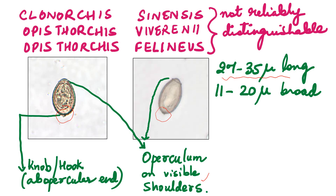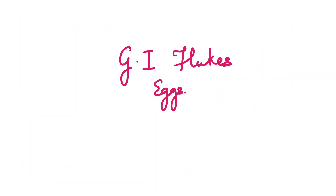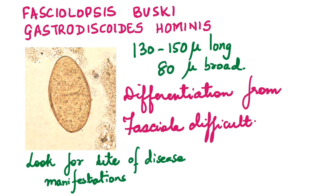Let's move on to the GI flukes. We have Fasciolopsis buski, Gastrodiscoides hominis, Metagonimus and Heterophyes. Fasciolopsis buski is found in the upper small intestines, and Gastrodiscoides — whose adult worms are found in the colon — is called the colonic fluke, with eggs passed out in stool. These eggs are again very large in size, almost similar to Fasciola hepatica, 130 to 150 microns.